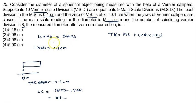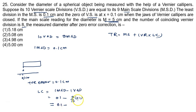Since 10 VSD equals 9 MSD, we have 1 VSD equals 9/10 of 1 MSD. With 1 MSD = 0.1 cm, the least count is 0.1 minus 0.09, which equals 0.01 cm.